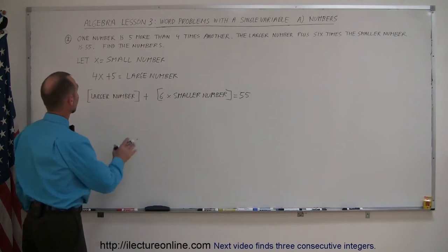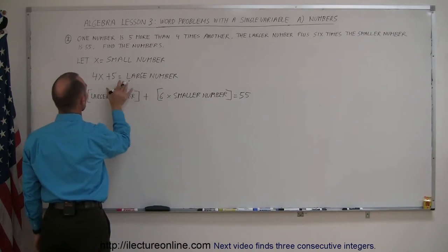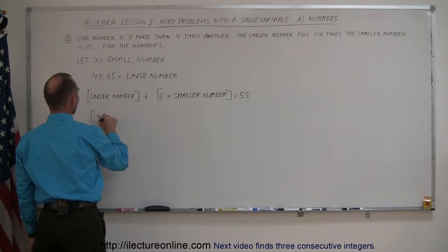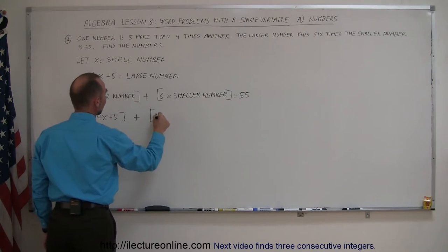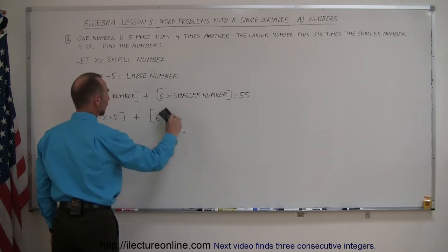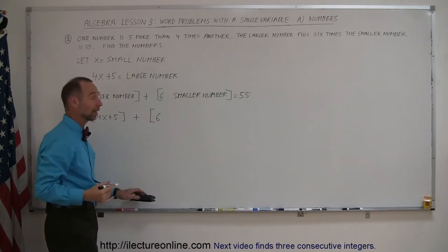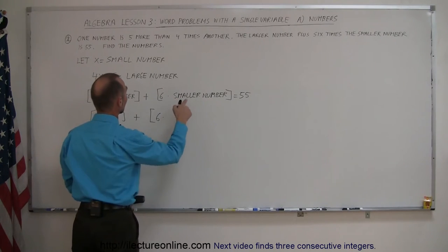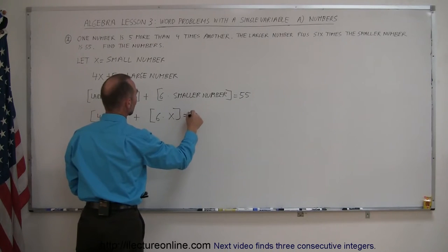Now, we defined the smaller number by x, and the larger number by 4x + 5. So we can say 4x + 5 plus six times the smaller number. This may confuse us a little bit, so let me write a dot. Six times the smaller number, which is x, and that equals 55.